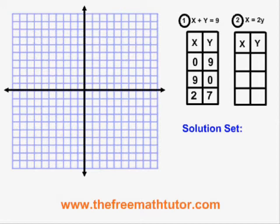For the second equation, x equals 2y: if x equals 0, y must be equal to 0. If x is equal to 10, y must be equal to 5. And if x is equal to negative 4, y must be equal to negative 2.